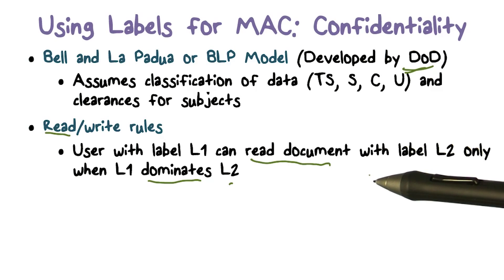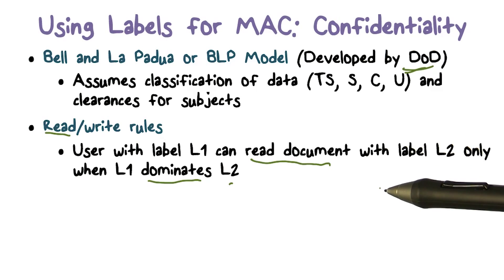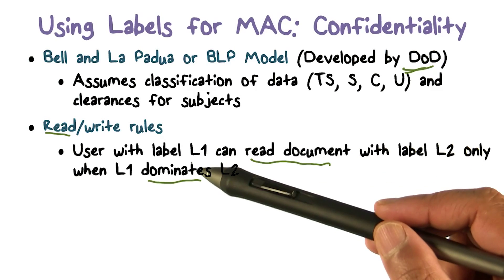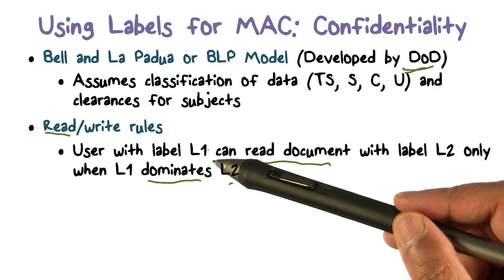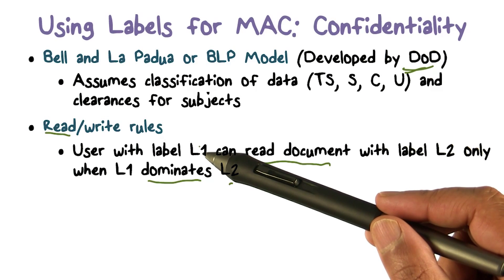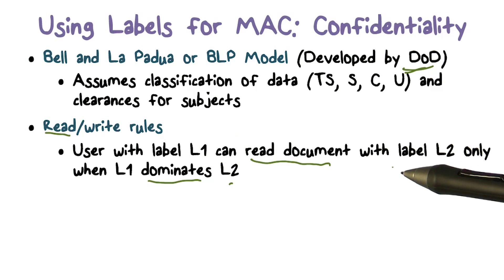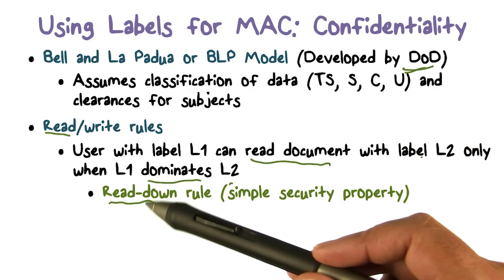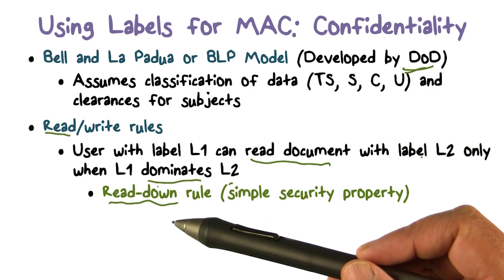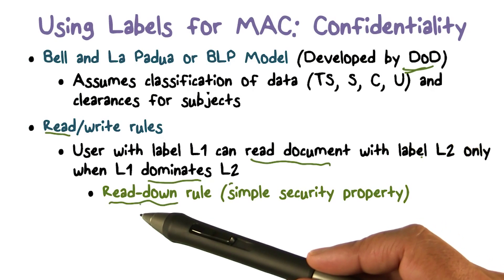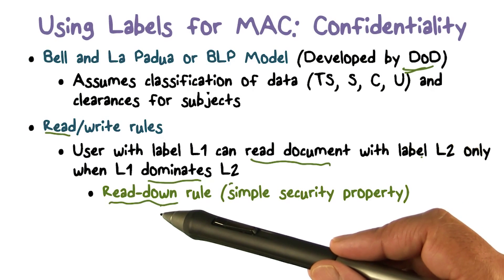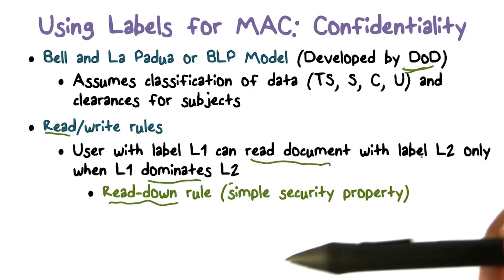The rule for read says: a user with label L1 can read a document with label L2 only when L1 dominates L2. When the label of the subject or user dominates the label of the document, they are able to read it. This is called the read down rule — you can read documents classified at your level or below. It's also called the simple security property.